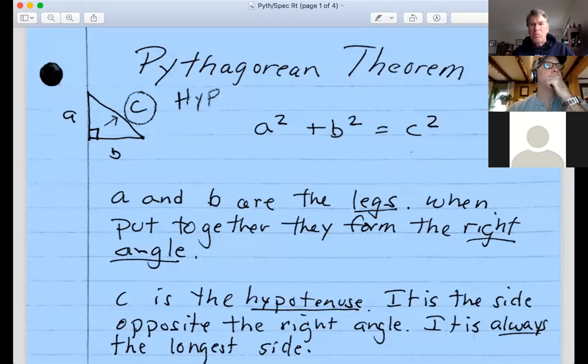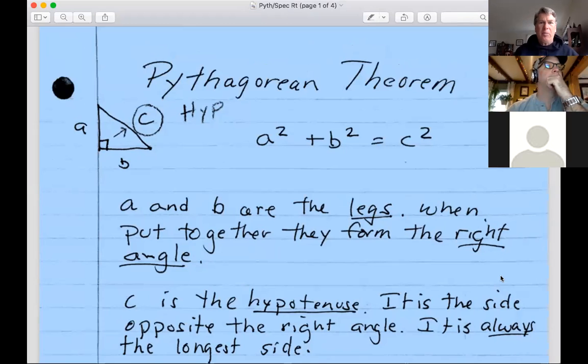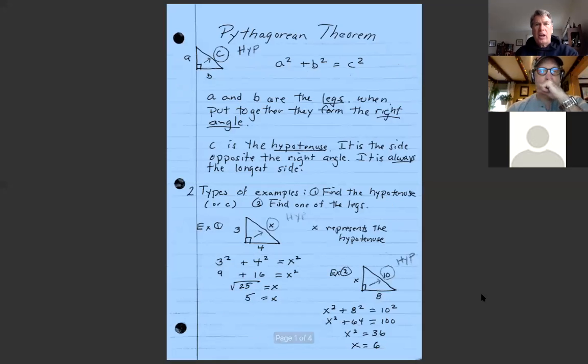All right, so we're back in the world of Pythagorean theorem with a new concept review. Here's what we've got: the Pythagorean theorem, a squared plus b squared equals c squared, where a and b represent what we call the legs, the two sides that when put together form the right angle. In my little example here, a and b are these two sides forming this right angle. C is referred to as the hypotenuse. It's the side opposite the right angle and it's always the longest side.